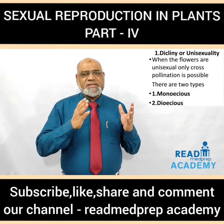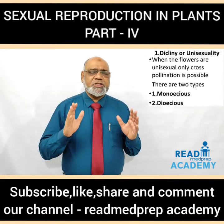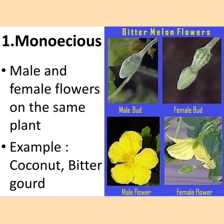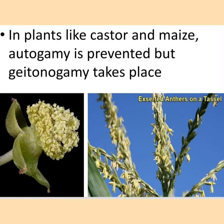Dicliny or unisexuality: when the flowers are unisexual, only cross-pollination is possible. There are two types — monoecious and dioecious. In monoecious plants, the male and the female flowers are on the same plant. Examples: coconut, bitter gourd. You can see on the right side the male bud of bitter gourd which opens and exposes the stamen, and the female bud which opens and forms the female flower having the stigma. In plants like castor and maize, autogamy is prevented but geitonogamy takes place.